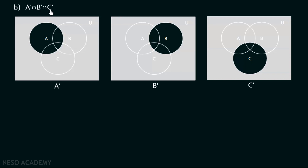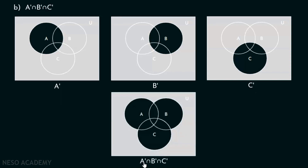You can clearly see that this area is not common between all three of them, this area is also not common, this area is also not common. There is only one area which is common between all three of them. You can see that this outside region is common between A complement, B complement and C complement. So, A complement intersection B complement intersection C complement is represented by this Venn diagram — this shaded region is A complement intersection B complement intersection C complement.